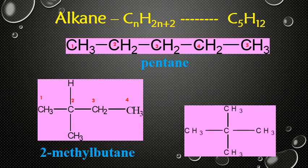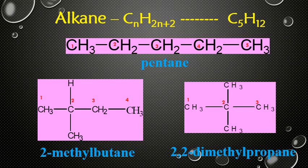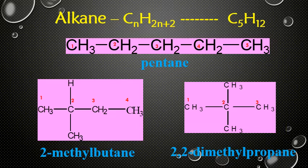Likewise, we can take another methyl group from the main carbon chain and attach it to the second carbon. Now there are only 3 carbons in the main chain, giving us 2,2-dimethylpropane. All three alkane structures have the same molecular formula C5H12, but the first has 5 carbons in the main chain, the second has 4, and the final one has only 3.